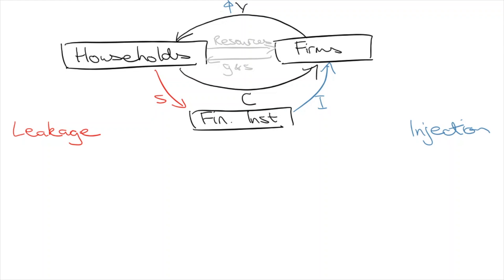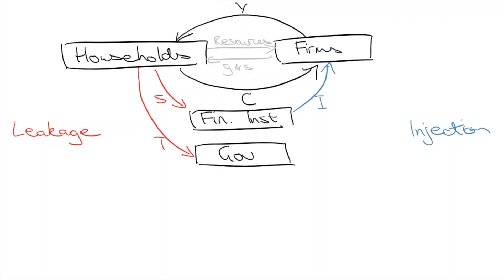More injections will lead to increased economic activity. What you see here is called the three-sector circular flow of income model, as we've introduced financial institutions to the two-sector model. In the four-sector model, we also acknowledge that another leakage from the circular flow is taxes to the government sector. An increase in taxes is another leakage which reduces economic activity. This tax revenue can be injected back into the economy through government expenditure, stimulating economic activity.